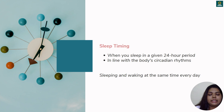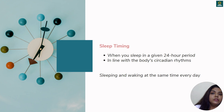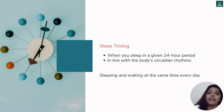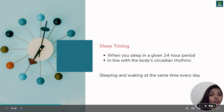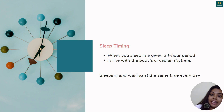If you sleep at 10 pm one day, then 12 am the next, then 2 am the following night, there is no proper timing for your sleep and that will also affect your sleep quality. In order to have good sleep quality, your sleep timing should be in tune with the circadian rhythm — sleeping by 10 or 11 pm at the latest and getting up at 5, 6, or 7 am, following this schedule every day.